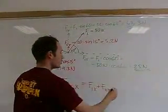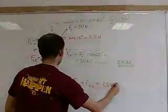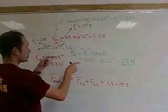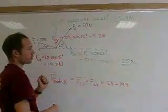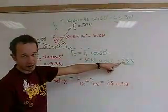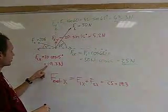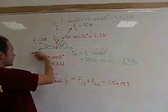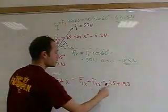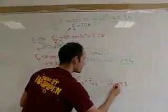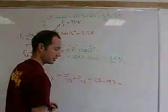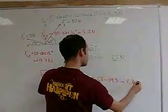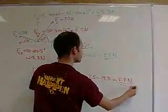So do we just go 25 plus 19.3? No, of course not, because the two X components are acting in the opposite direction. So this is really plus 25 newtons and this X component is minus 19.3. Maybe we should write it in here. It's acting in this direction. It's minus 19.3. So here we would actually go 25 minus 19.3 and that is 5.7 newtons, positive 5.7 newtons.